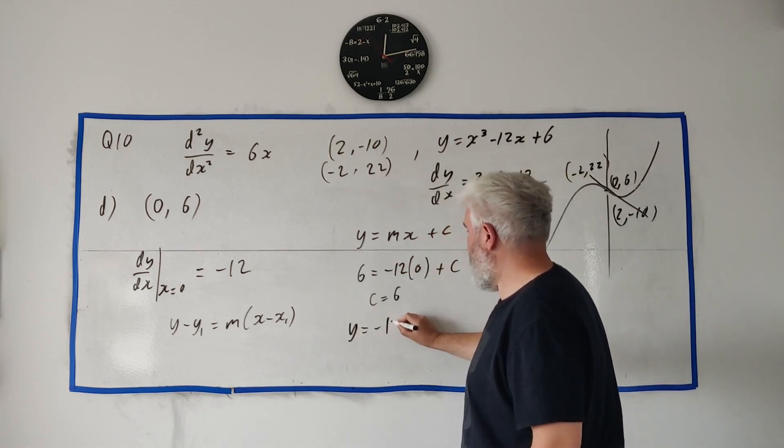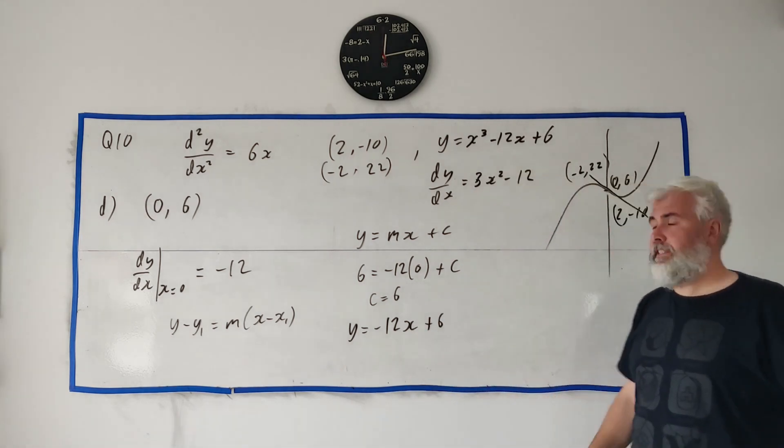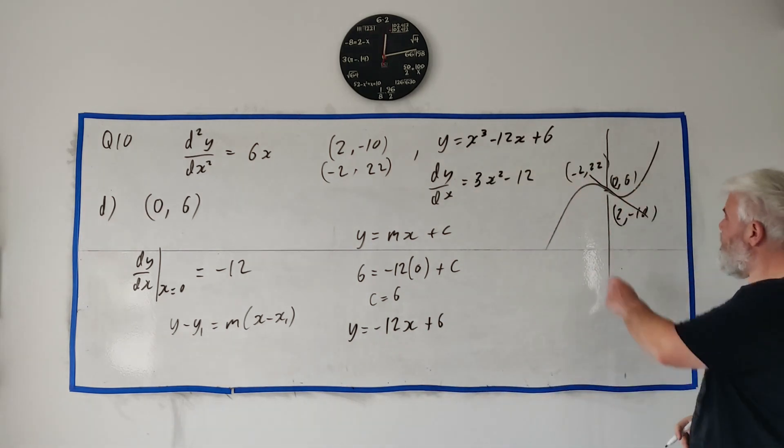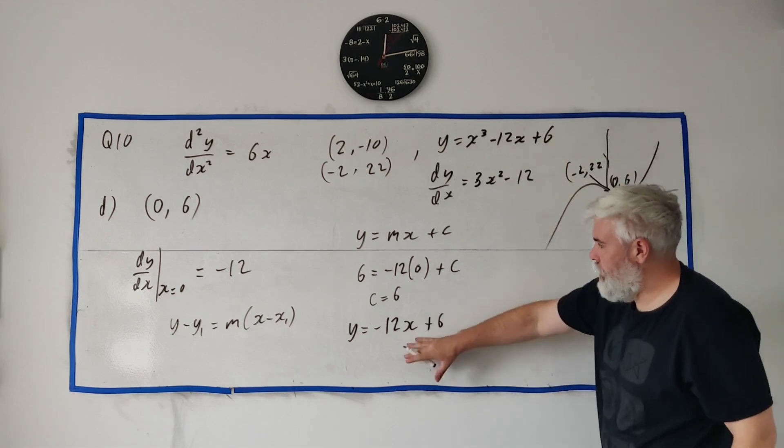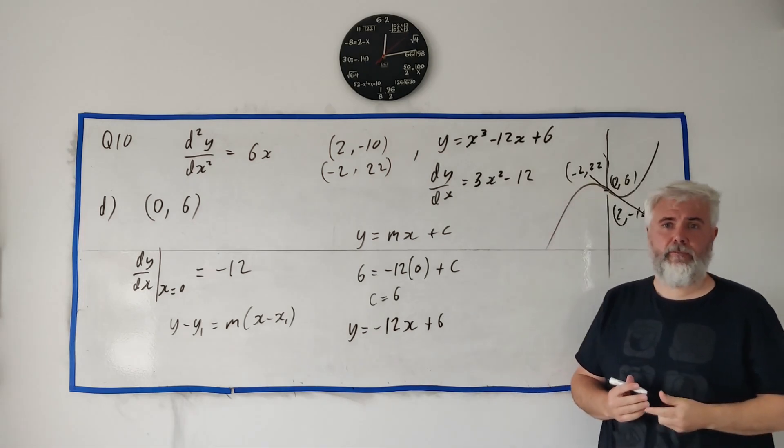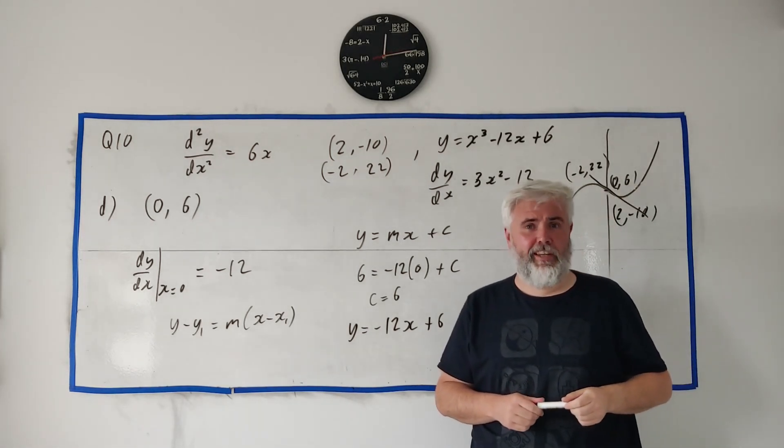y is equal to minus 12x plus 6. That's the equation of this tangent here. It has a y-intercept 6 and it has a slope going down. Yeah, that's the answer to part D. And that's actually the answer to all of question 10. And thanks for watching and have a great day.